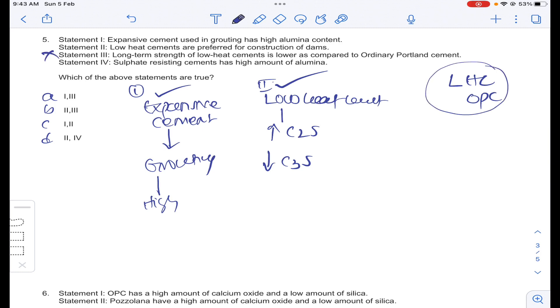Sulfate resisting cement has high alumina content. No. Sulfate resisting cement alumina content is limited. This is wrong statement. Statement 1 and 2 are correct. Answer C for question number 5.